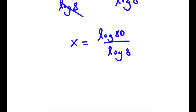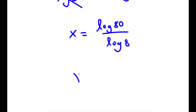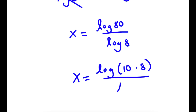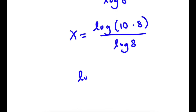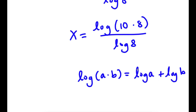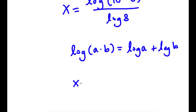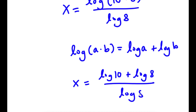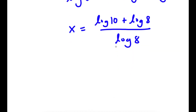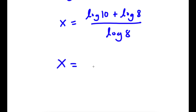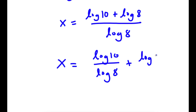So now, log 80 — well, 80 is the same thing as 10 times 8, so I'm going to rewrite log of 80 as log of 10 times 8. And if I have something in the form log of a times b, this is equal to log a plus log b. So log 10 times 8 equals log 10 plus log 8, and I have this over log 8. So I'm going to rewrite this as log 10 over log 8 plus log 8 over log 8.